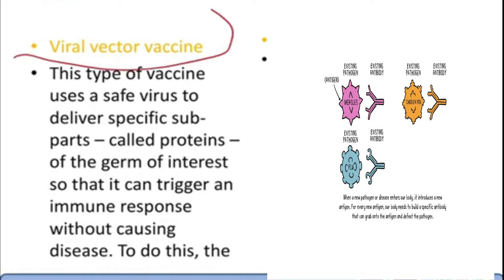Next is the viral vector vaccine. In a viral vector vaccine, we use a bacteria or virus as a vector — a carrying agent. To make it simple, Aedes aegypti is a mosquito which carries malaria as a vector. When the mosquito bites you, it doesn't cause malaria itself, but it carries the malaria disease. In the same way, in viral vector vaccines, a vector is used — it might be some symbiotic bacteria or a virus.